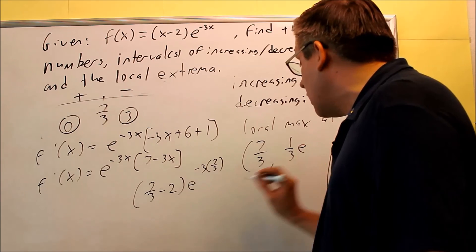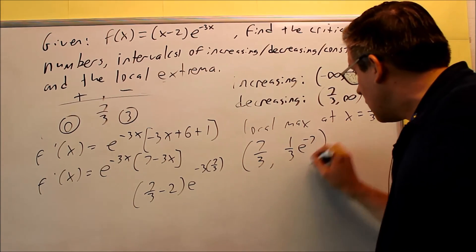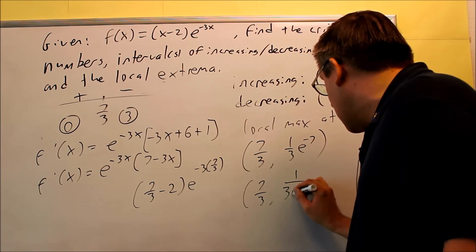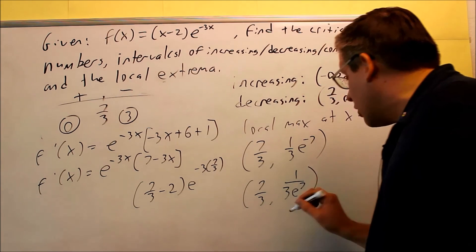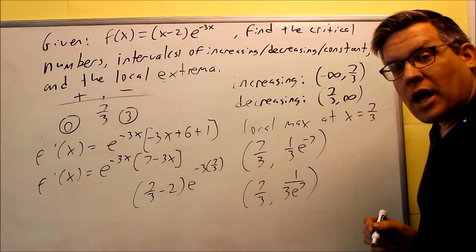If we work this out, we get 1 third and then this is e to the negative 7th. So you could also write that as 7 thirds and 1 over 3e to the 7 and put that on the bottom. This would be the exact coordinate for your local maximum.